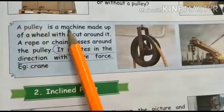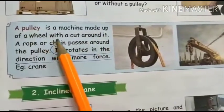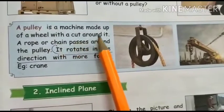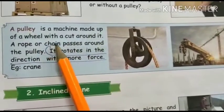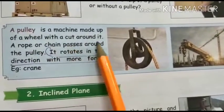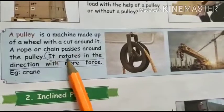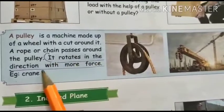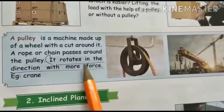A pulley is a simple machine made up of a wheel with a cut around it. A rope or chain passes around the pulley. It rotates in the direction with more force.